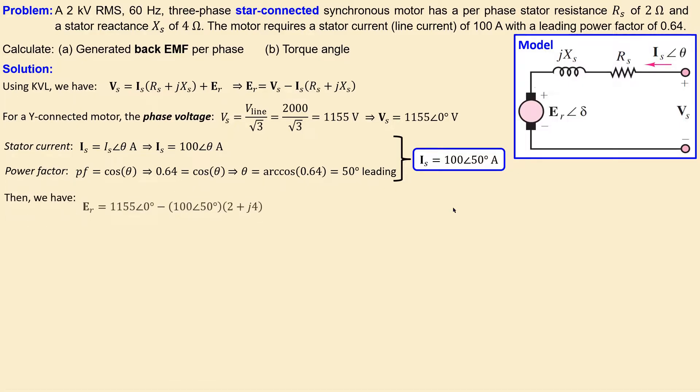We use this expression and substitute what we've calculated for the phase voltage and the current. We have the stator resistance and reactance—just substitute the values in here.